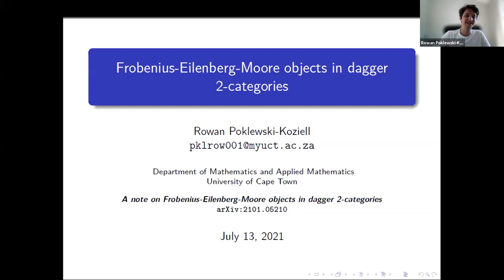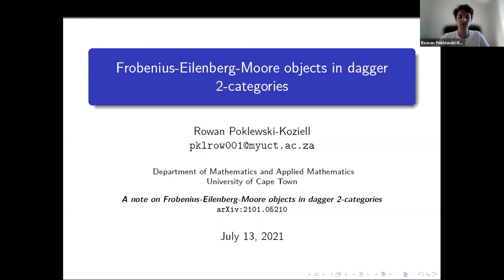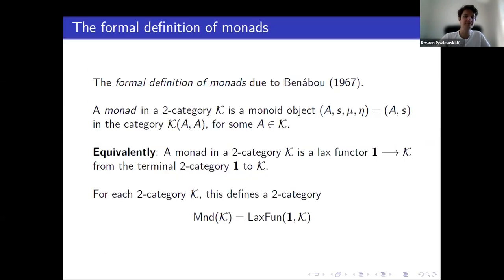A big thanks to the organizers for the invitation to speak — it's been a great week so far. There is a paper on the arXiv which you can check out for more background and detail. In a nutshell, this work is about the formal theory of Frobenius monads — somewhat in the spirit of Ross Street's two-part work with Steve Lack on the formal theory of monads. A monad in a 2-category is nothing but a monoid object in one of the hom-categories, consisting of a quadruple...